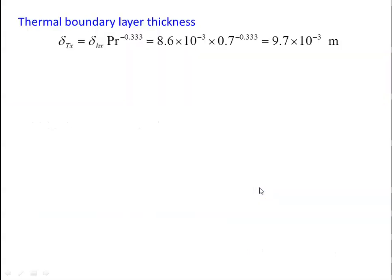Thermal boundary layer thickness: δT = δH × Pr⁻⁰·³³³ = 8.6 × 10⁻³ × (0.7)⁻⁰·³³³ = 9.7 × 10⁻³ m.